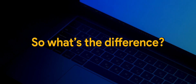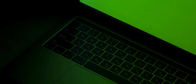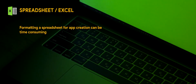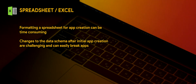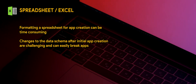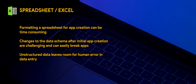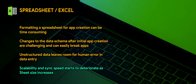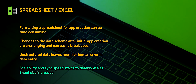So what's the difference? Here's what we know so far. For spreadsheet or Excel, formatting a spreadsheet for app creation can be time-consuming. Changes to the data schema after initial app creation are challenging and can easily break apps. Unstructured data leaves room for human error in data entry. Scalability and sync speed starts to deter as sheet size increases.